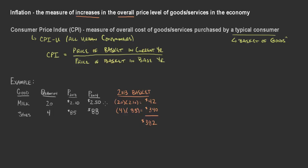Let's do the exact same thing, but now for prices in 2014. In this basket we have the same quantities — those don't change, as we've talked about with the difference between real and nominal. We're looking to calculate real changes in inflation and price indexing, so we keep the quantity the same. The price changes to $2.50 per unit: 20 times 2.50 is $50. Then for shoes, four pairs times a price of $88 gives us $352. Adding milk and shoes together — our basket — $352 plus $50 is $402.